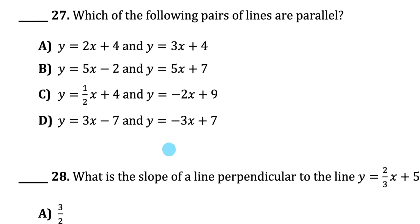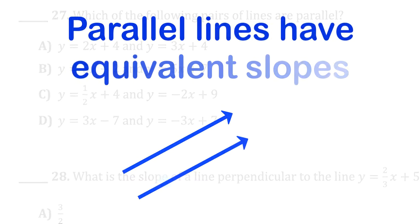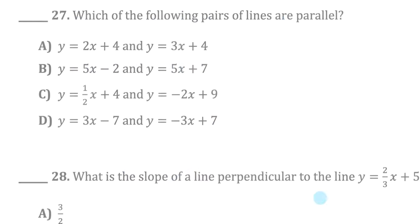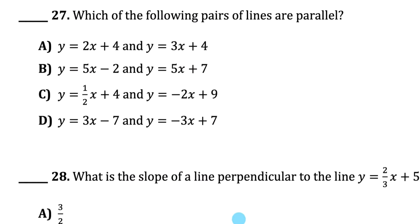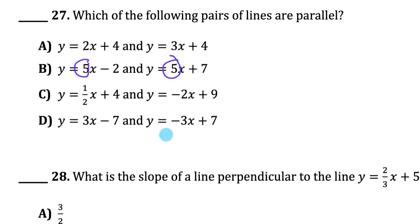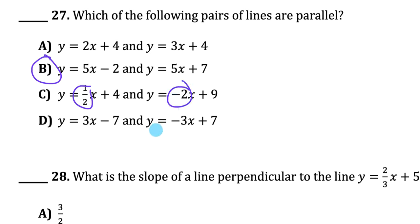Question 27: Which lines are parallel? Parallel lines have the exact same slope — we can ignore y-intercepts. Checking each pair of slopes: slope of 2 and slope of 3 — not parallel. Slope of 5 and slope of 5 — those are parallel, answer B. The other pairs are also not parallel.